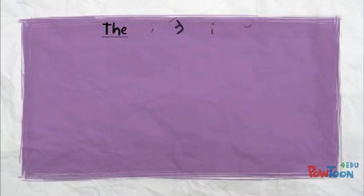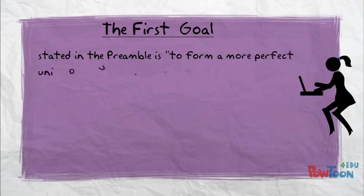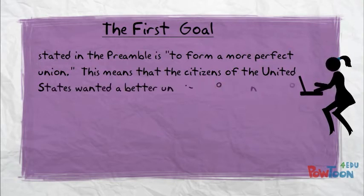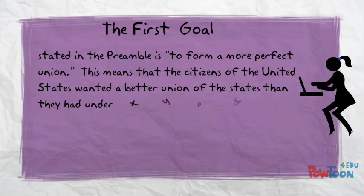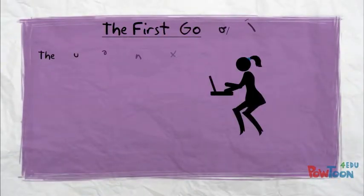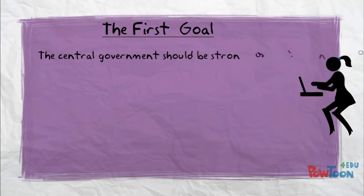The first goal: the preamble states "to form a more perfect union." This means that the citizens of the United States wanted a better union of the states than they had under the Articles of Confederation. The central government should be stronger in order to unite the state governments as one strong nation.